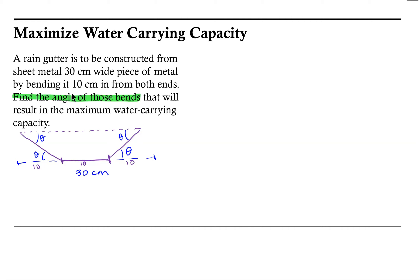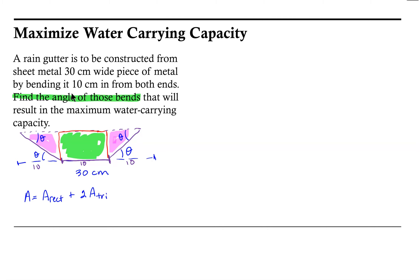There's our rain gutter. As we look at it, there are a couple of ways to think about finding the area. The easiest and most straightforward would be to think of this as one rectangle in the center and then two triangles on the left and on the right, so the total area is the area of the rectangle plus two times the area of the triangles.